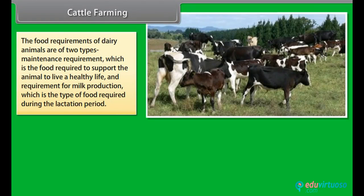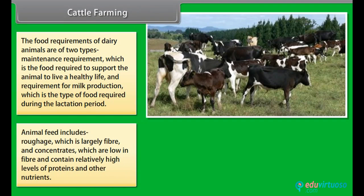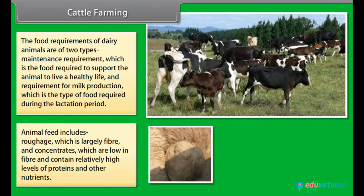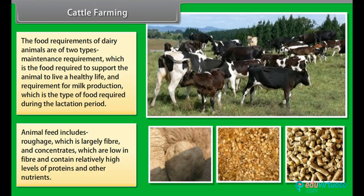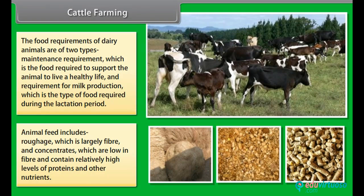The food requirements of dairy animals are of two types: maintenance requirement, which is the food required to support the animal to live a healthy life; and requirement for milk production, which is the type of food required during the lactation period. Animal feed includes roughage, which is largely fiber, and concentrates, which are low in fiber and contain relatively high levels of proteins and other nutrients.